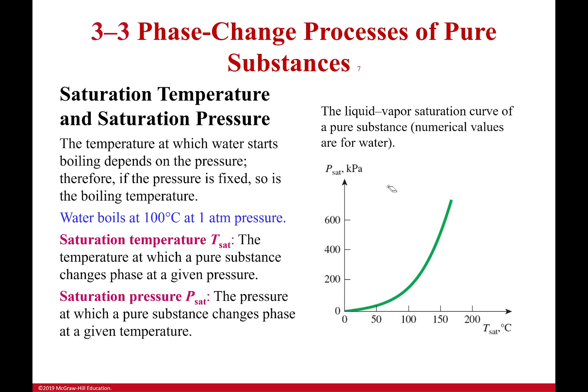We're going to stop here, because in the next video I want to show you where we find saturation temperature and saturation pressure inside your tables, because you need to know how to use your tables for this — it's vitally important. Remember, this is simply where it begins to change phase: at constant pressure, changing temperature causes a phase change at the saturation temperature; at constant temperature, changing pressure causes a phase change at the saturation pressure. Next time we're going to jump into the tables.